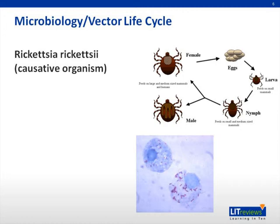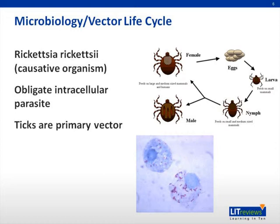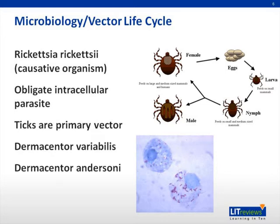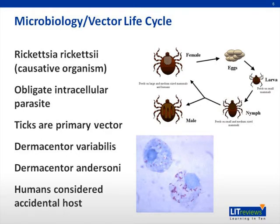Rickettsia rickettsii are the causative organism of Rocky Mountain Spotted Fever. These are obligate intracellular gram-negative coccobacilli that use ticks as their primary vector for mode of transmission. The ticks most commonly carrying Rocky Mountain Spotted Fever are Dermacentor variabilis and Dermacentor andersoni — the American dog tick and mountain wood tick, respectively. Humans are considered an accidental host in the natural life cycle; the definitive host would be canines or any other warm-blooded wild mammal.